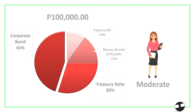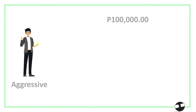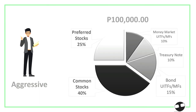If you are an aggressive investor, we can put more weight on preferred and common stocks, with equity exposure at around 65% — more than half of your portfolio. We still put a little in money market funds so you have something to withdraw anytime. To neutralize your risk exposure in equities, we can add 10,000 in treasury notes and 15,000 in UITF or mutual funds in the bond category. That combination would give you an optimized return.